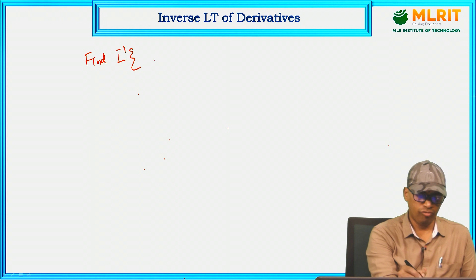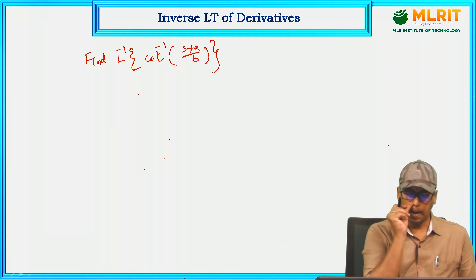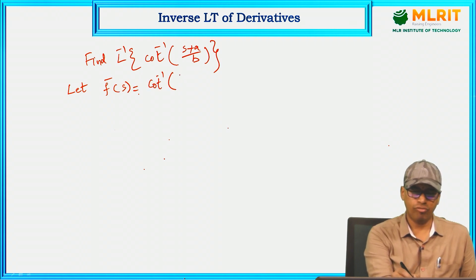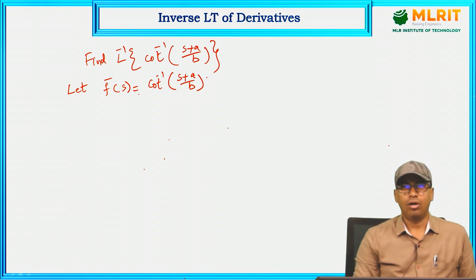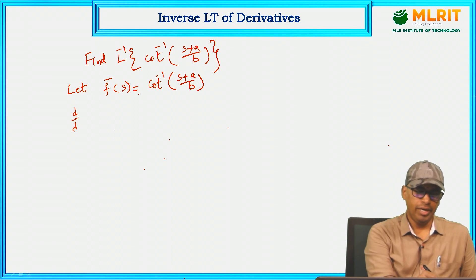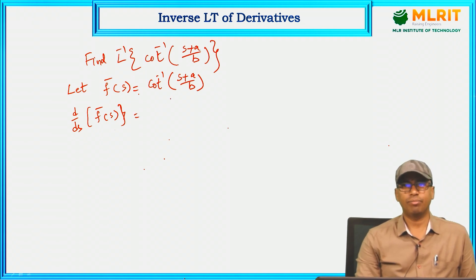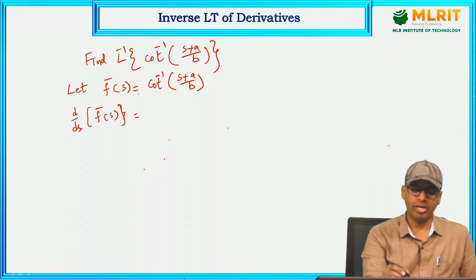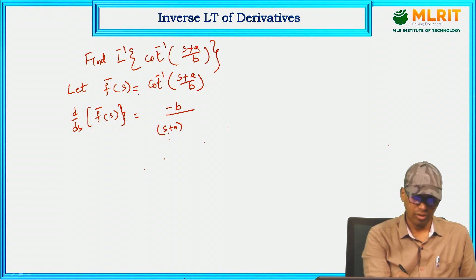Let us see one more problem. Find inverse Laplace of cot⁻¹((s+a)/b). We take f̄(s) = cot⁻¹((s+a)/b). Now let us differentiate with respect to s: d/ds of f̄(s) equals the derivative of cot⁻¹((s+a)/b), which simplifies to −b / [(s+a)² + b²].